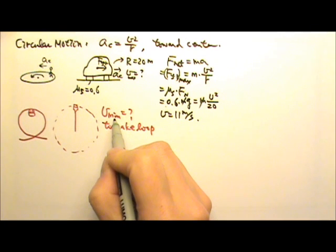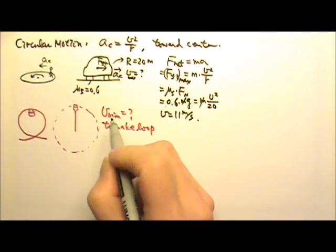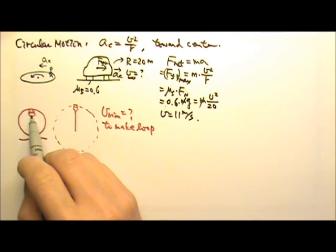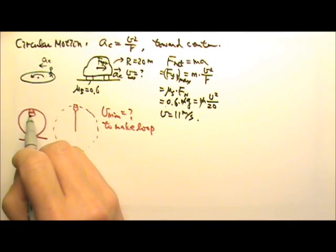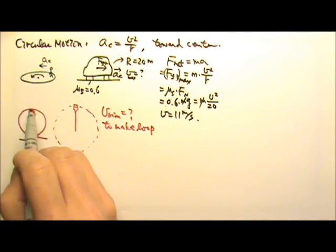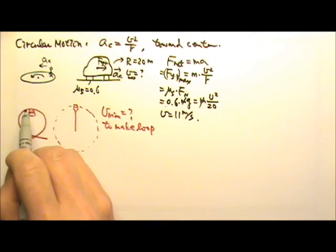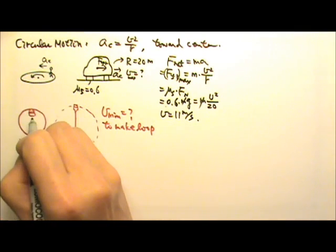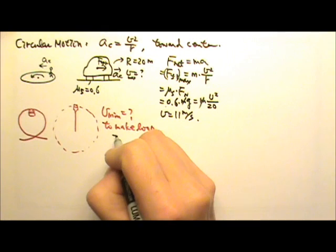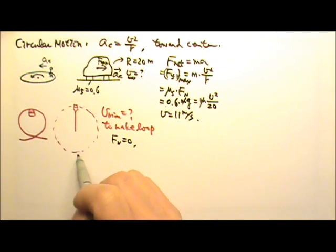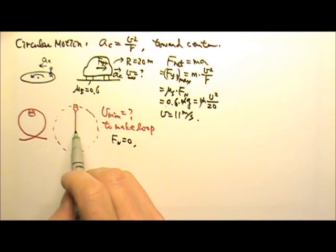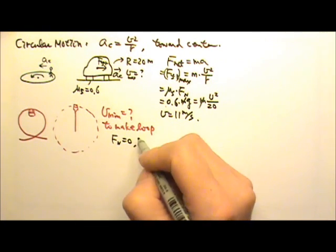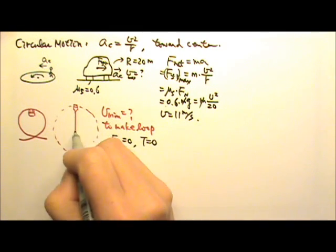Suppose we're looking for the minimum speed for the cup or the coaster to complete the loop. If it's minimum speed, the coaster is almost going to fall — meaning it almost loses contact with the track, so the normal force is zero. For the water cup case, the cup is almost going to fall, meaning the string is no longer taut, so the tension is zero.